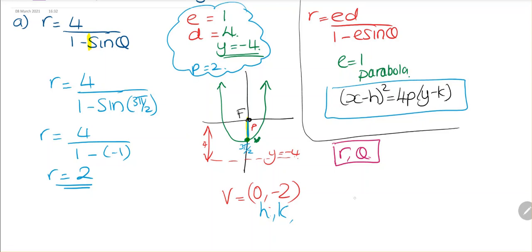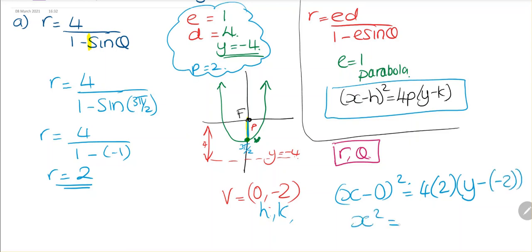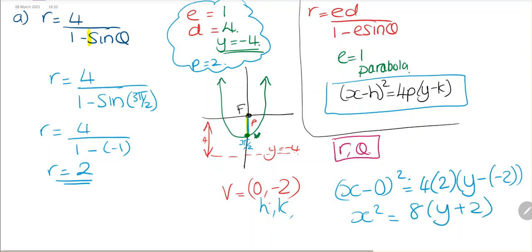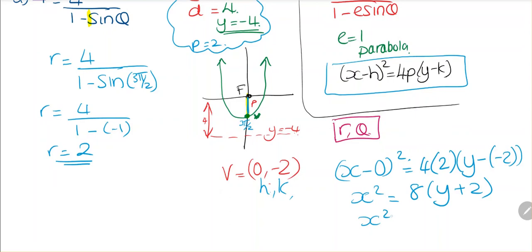So we've got x minus h, and h is 0, squared, equals 4 times p, and p we found is 2, multiplied by (y minus k), and k is minus 2. So x squared equals 8 multiplied by (y plus 2). If we expand, that's 8y plus 16, and this is our equation.